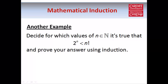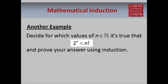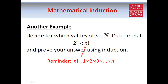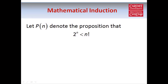So now here's another example. It's slightly different this time — we have an inequality instead of an equality, and we have to start by working out which values of n this inequality holds for, and then we have to prove our answer using induction. The inequality says that 2 to the power n is smaller than n factorial. Let p(n) be the propositional statement that 2 to the power n is smaller than n factorial.